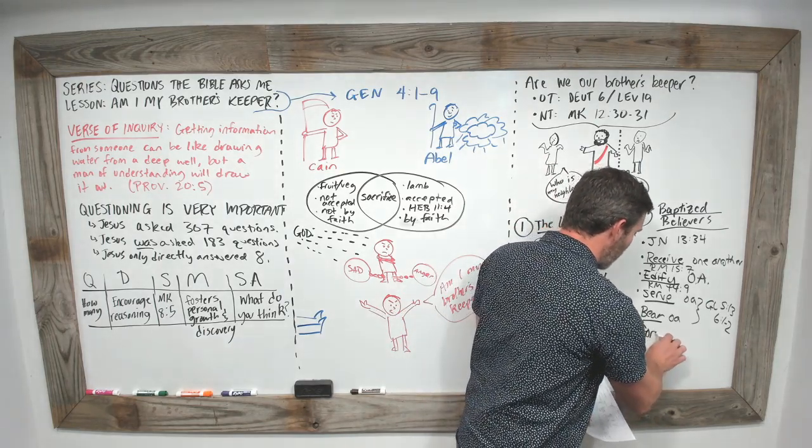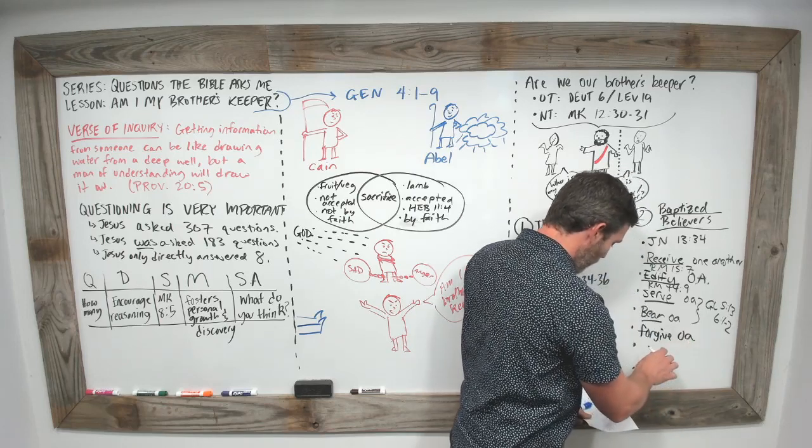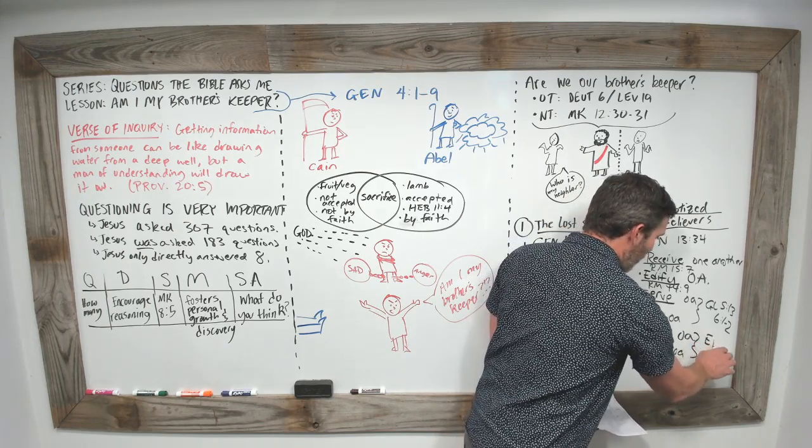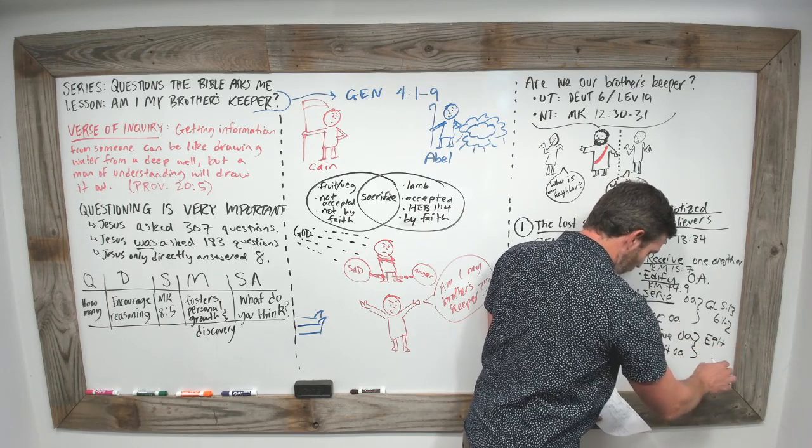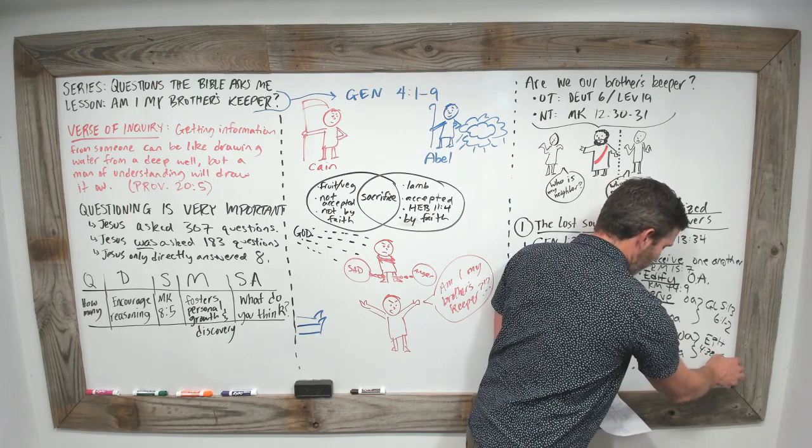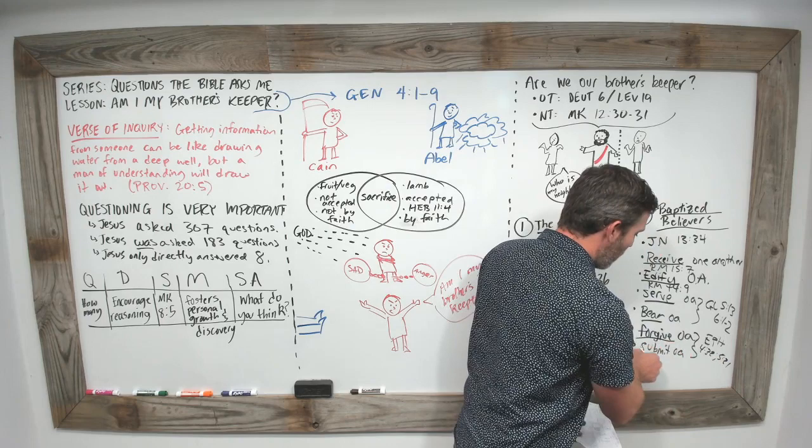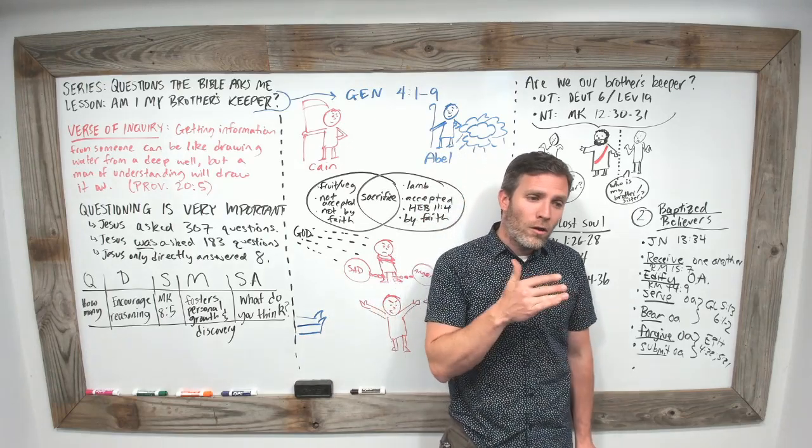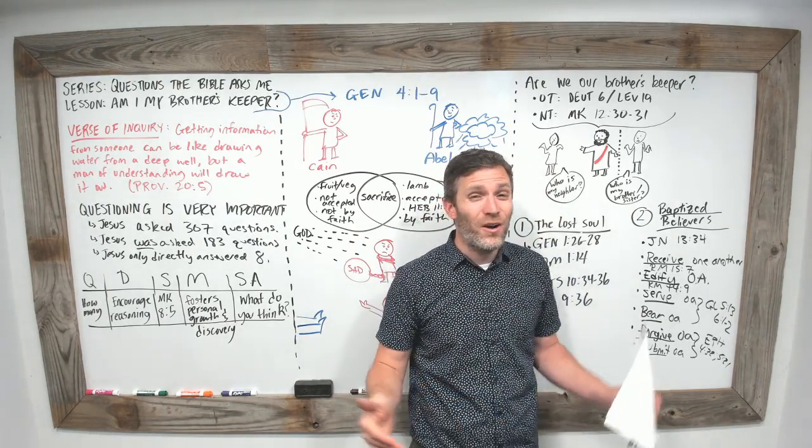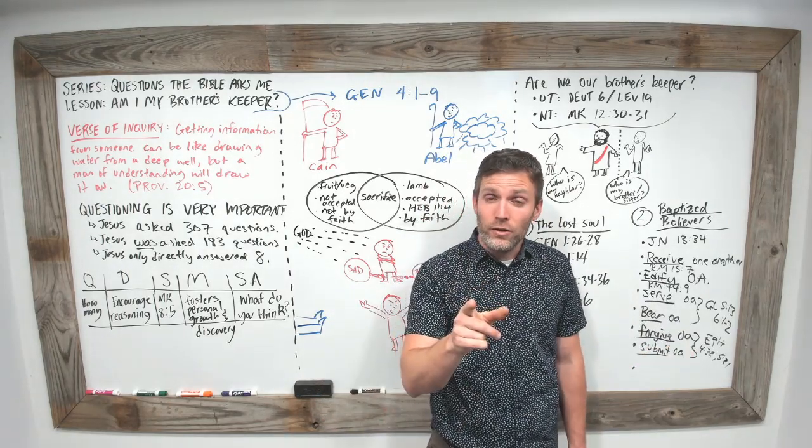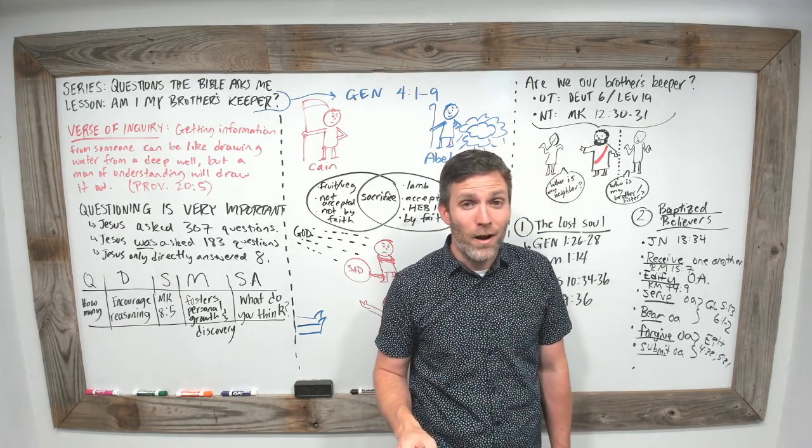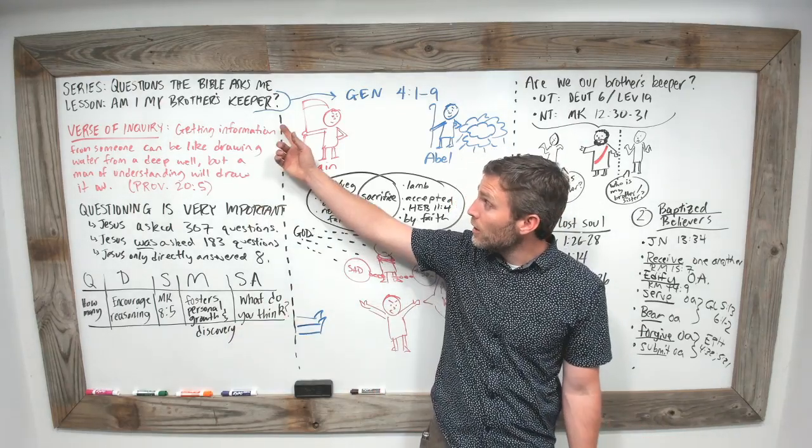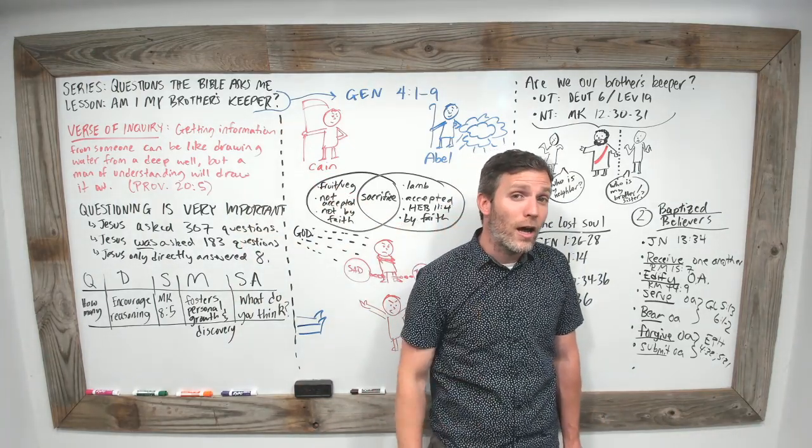The last three: forgive one another and submit to one another. Both of these come from the book of Ephesians. Ephesians chapter 4, verse 32 and chapter 5, verse 21. Think about the people that you don't get along with. People that if you weren't related spiritually through Jesus Christ, you might say, 'I just don't want to interact with that person.' But through Jesus, you have to now forgive those who normally you might not forgive. Submit to people that you might not normally submit to. This is all because of the question, 'Am I my brother's keeper?' The answer is yes, even the ones who you might not like or get along with.